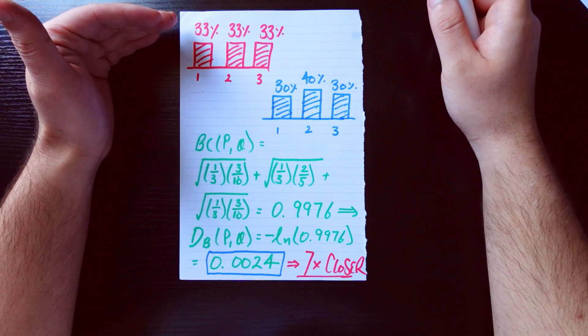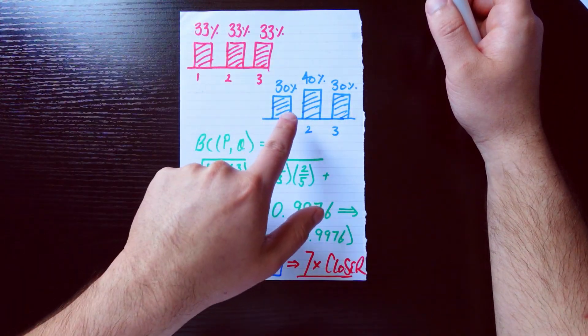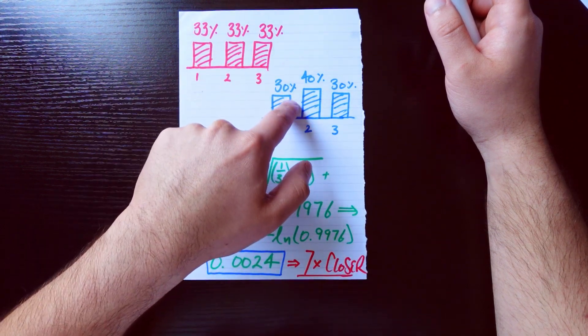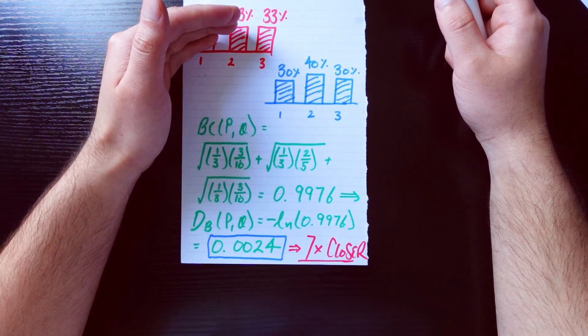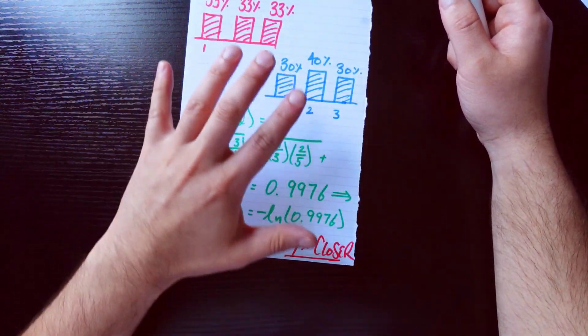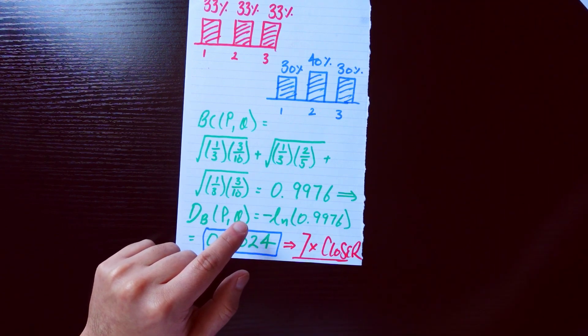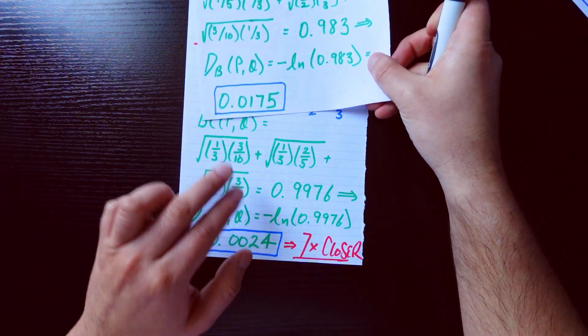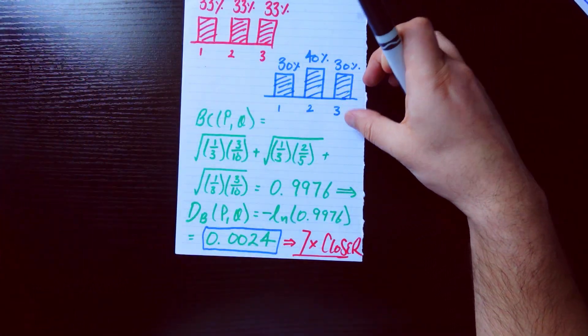So I have one more case for us. What's the difference between these two distributions? This one is the exact same one you were looking at before, but now we're asking for the difference between this guy and this guy. This one is clearly closer to this distribution than the other blue distribution was. I won't go through the math again, but you get that the distance is now 0.0024.